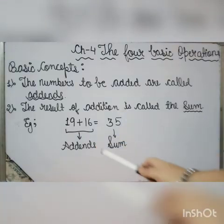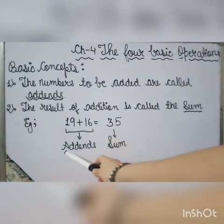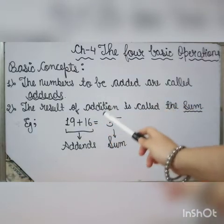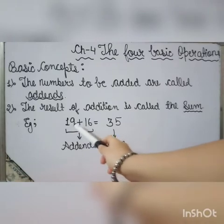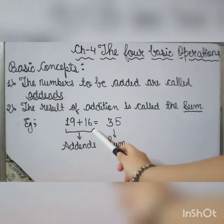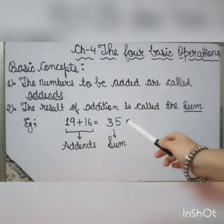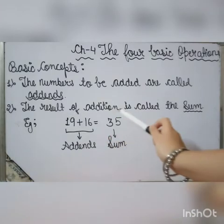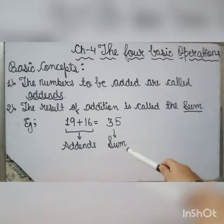In the example 19 plus 16 equals 35, the numbers 19 and 16 are addends because the numbers to be added are called addends. The result of addition is called the sum, so here 35 is the sum.